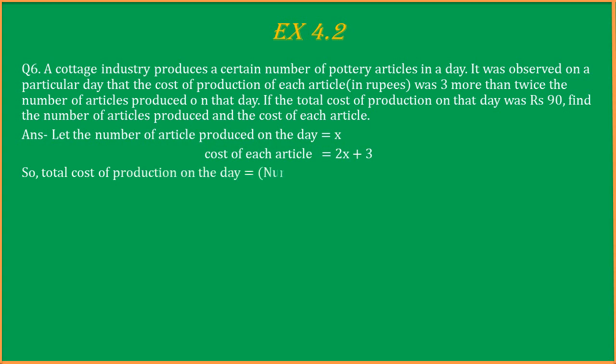Now the total production cost will be the number of articles multiplied by cost of one article. So it will be x multiplied by (2x + 3), which simplifies to 2x² + 3x. This is the total cost of production on that particular day. But in the question we're given that total cost is 90 rupees, so this will be equal to 90.